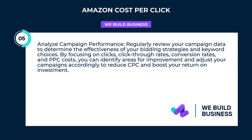Analyze campaign performance. Regularly review your campaign data to determine the effectiveness of your bidding strategies and keyword choices. By focusing on clicks, click-through rates, conversion rates, and PPC costs, you can identify areas for improvement and adjust your campaigns accordingly to reduce CPC and boost your return on investment.